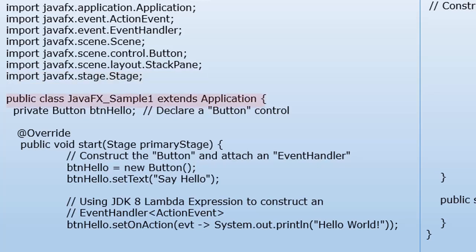Our class name is JavaFXSample1 and we extend it to Application. Inside this class, we declare a private Button called btHello. The start method contains the parameter primaryStage. Inside this method, we construct the button: btHello equals new Button. Then we set the text with settext 'Say Hello'. We also use a lambda expression to construct an event handler using ActionEvent: btHello.setOnAction, event System.out.print 'Hello World'.